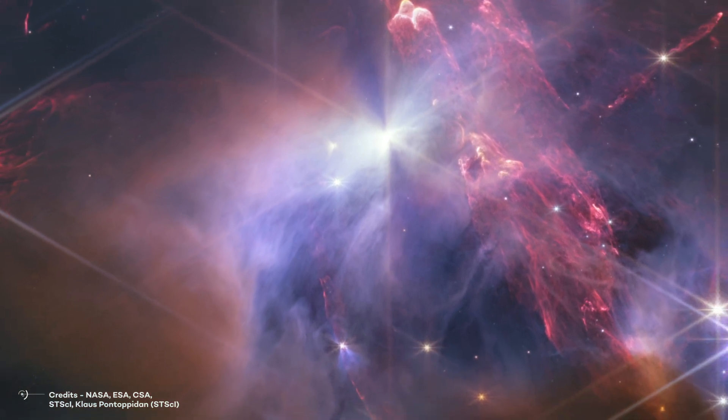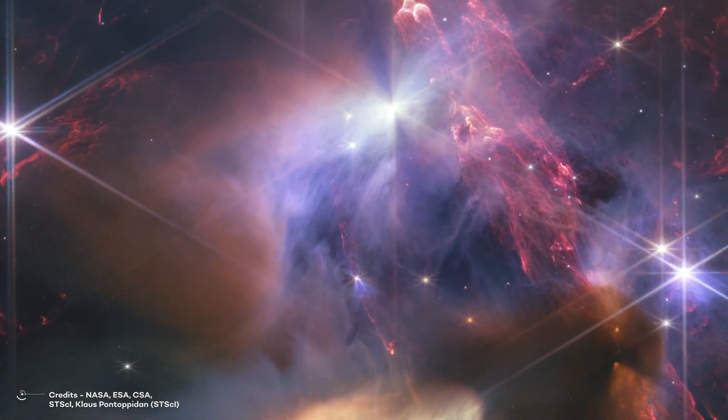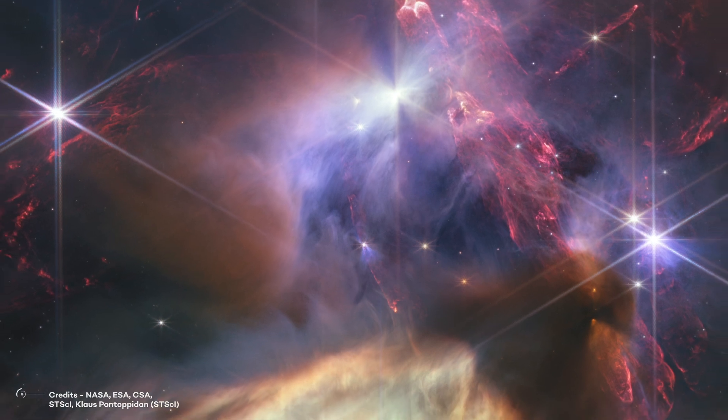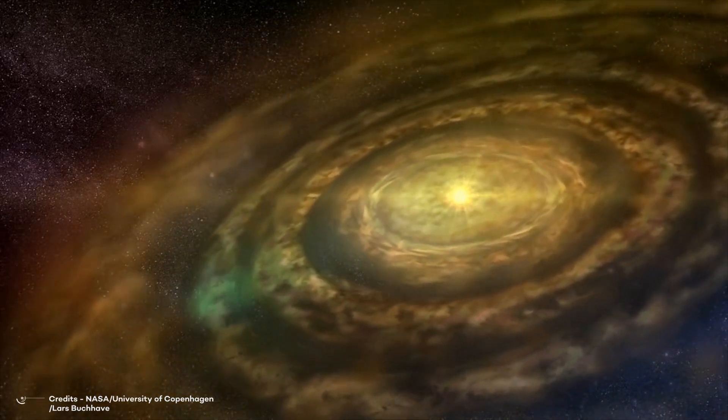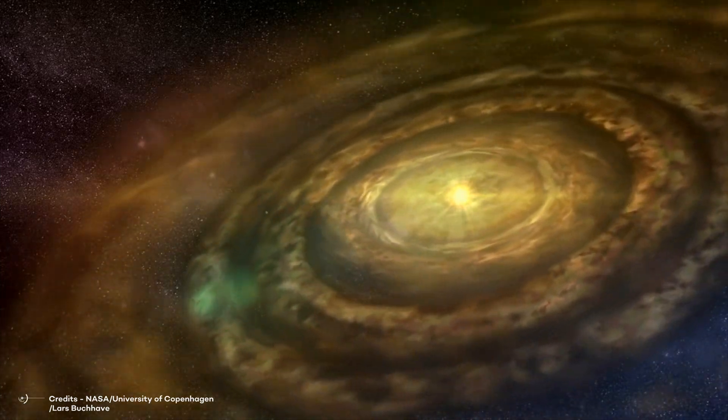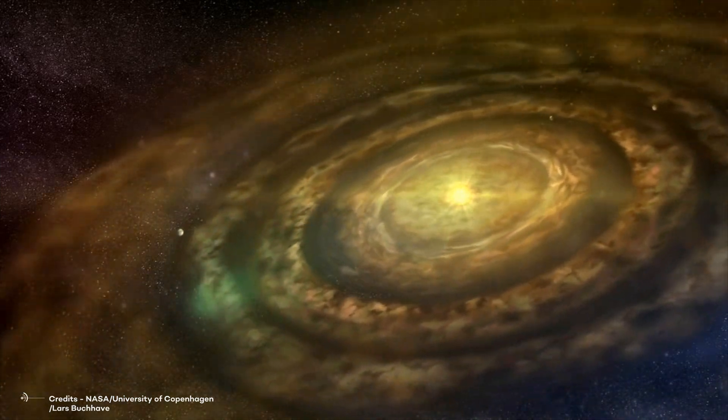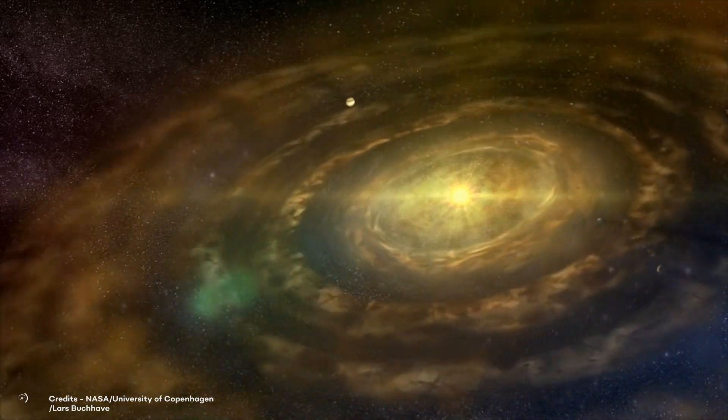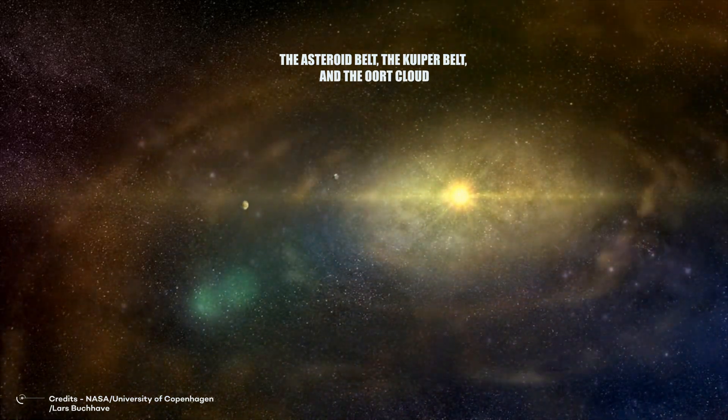Protoplanetary disks are thought to be made up of 99% gas and 1% dust. As planets form and stellar systems evolve, their circumstellar disks also evolve. Circumstellar disks around older stars may include dust, gas, asteroids, comets, planets, and other debris. Our Sun has several circumstellar disks, the asteroid belt, the Kuiper belt, and the Oort cloud.